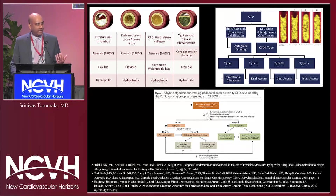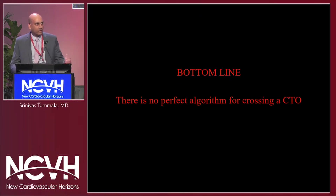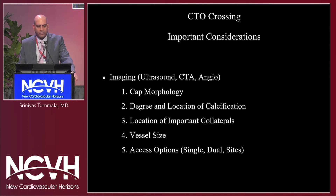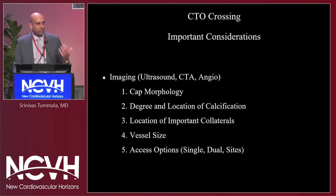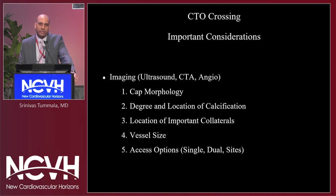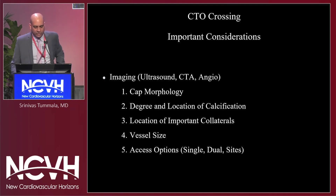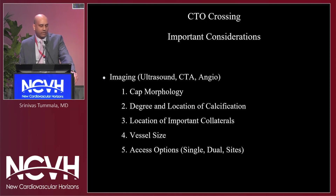The problem with all of these, when you look at them, is that there's really no perfect algorithm for CTO crossing. That's where experience and talking to people who do this all the time really makes a difference. Important considerations include imaging — cap morphology, proximal and distal; degree and location of calcification; location of important collaterals so you don't knock them off during intervention; vessel size, since getting from a larger vessel into one that's one millimeter is a very tough recanalization; and access options — single, dual, which sites, arm, above, below, and whether to go retrograde first.